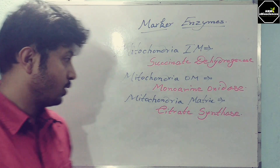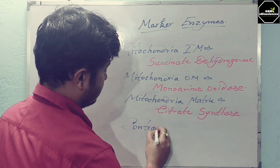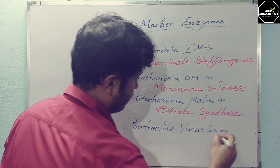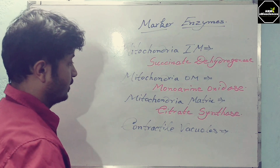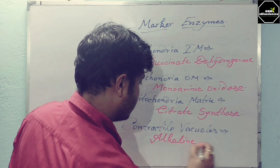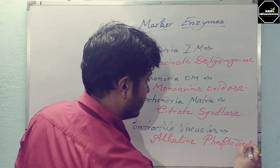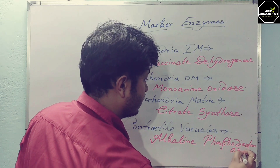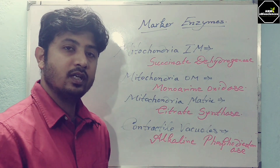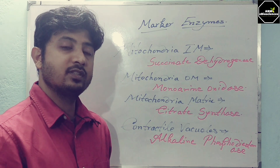One more thing I forgot: contractile vacuoles. For contractile vacuoles, you can use alkaline phosphodiesterase as the marker enzyme. So I have now covered each and every subcomponent of a cell with their specific marker enzymes used in research or when isolating a particular organelle.